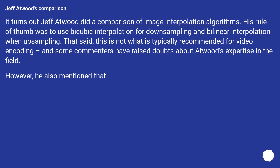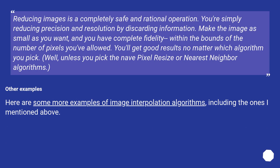It turns out Jeff Atwood did a comparison of image interpolation algorithms. His rule of thumb was to use bicubic interpolation for downsampling and bilinear interpolation when upsampling. That said, this is not what is typically recommended for video encoding, and some commenters have raised doubts about Atwood's expertise in the field. However, he also mentioned that reducing images is a completely safe and rational operation — you're simply reducing precision and resolution by discarding information. Make the image as small as you want and you'll get good results no matter which algorithm you pick, unless you pick the naive pixel resize or nearest neighbor algorithms.